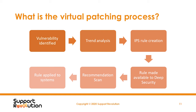A recommendation scan goes in and asks the agent what's running on the system, what ports are open and listening, and what software is looking at those ports with a few bits of detail. That gets sent over to the Trend Deep Security Management Server, which then looks it up against the database and determines what rules need to be deployed.